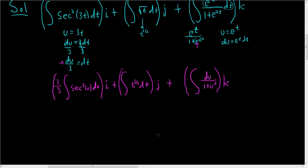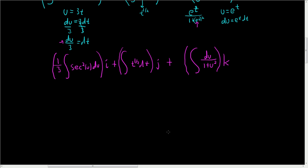Let's keep going. So the antiderivative of secant squared, if you ever forget what it is, just ask yourself, what is a function whose derivative is secant squared? Well, tangent. So this will be 1 third tangent of u. But u was 3t. So tangent of 3t plus our arbitrary constant, which we'll call c sub 1. And this is times i.